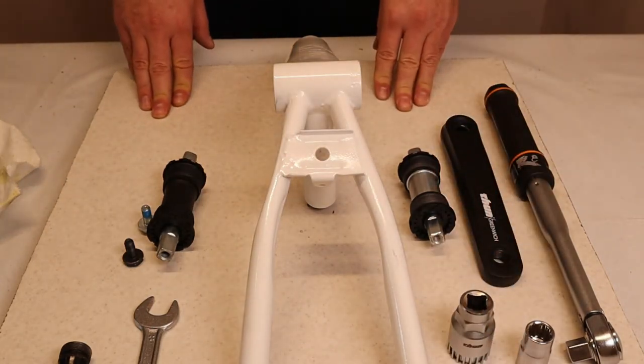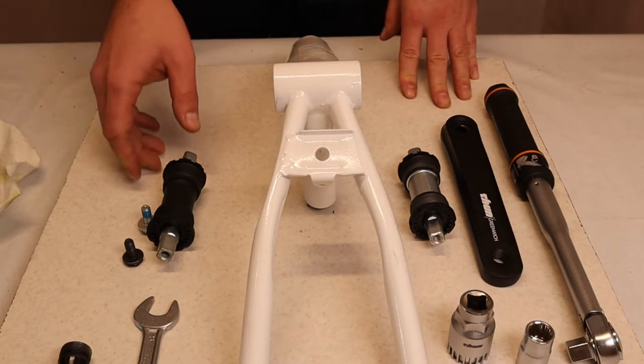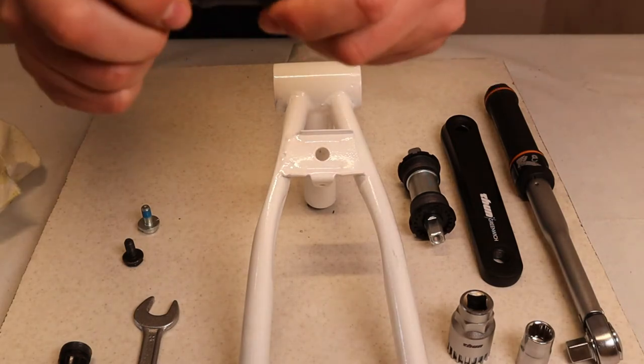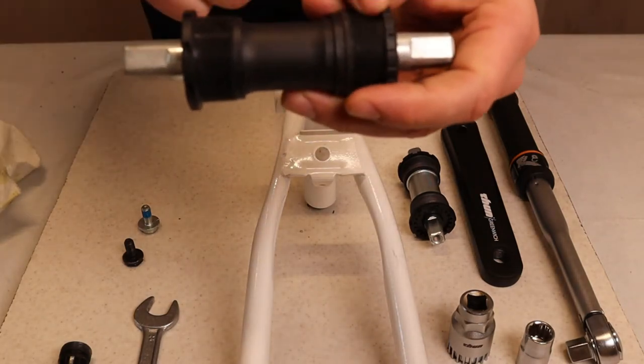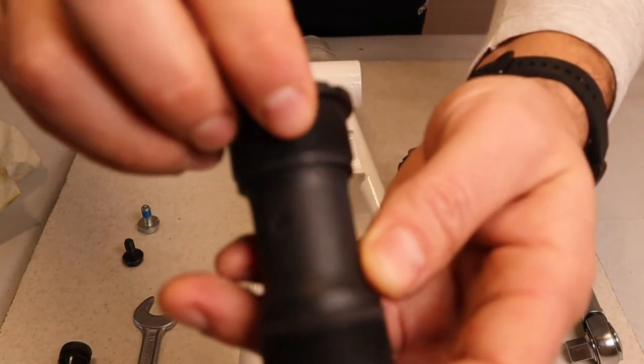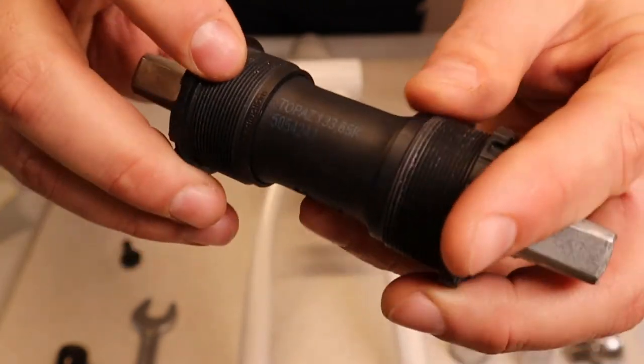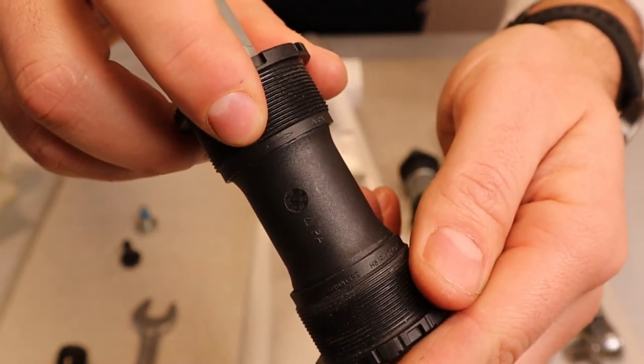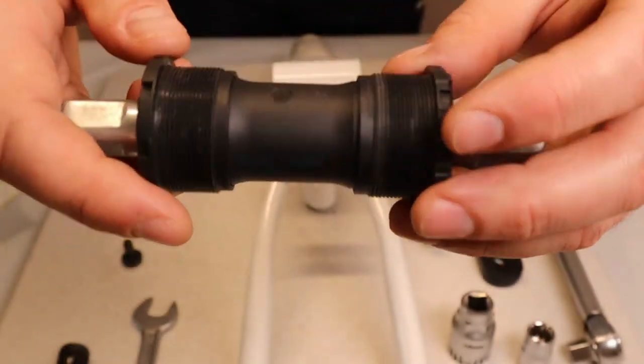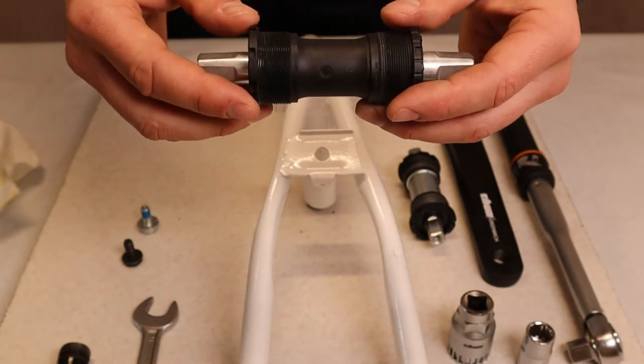So first thing we have to figure out the thread direction. Tune has made a special marking on each cup. So we have the right cup, left cup and you will see here first the thread direction. So you will see here left-handed and they have actually the arrow of the way the thread should be turned. Same goes for the left cup. So it's very easy to know which way to turn the threads.